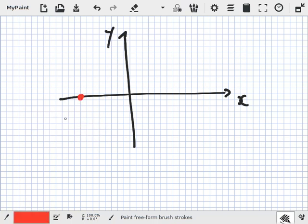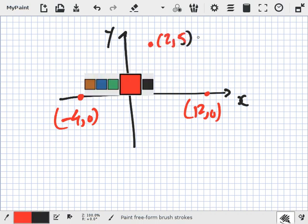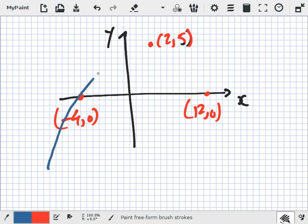So this point here is minus 4, 0. This point here is 12, 0. And this point here is 2, 5. Oh, you've got X values. I thought you put the midpoint. No, all X values. This is Y equals G(x).